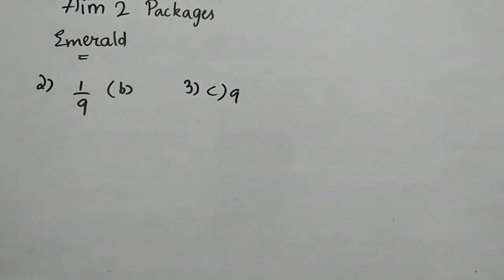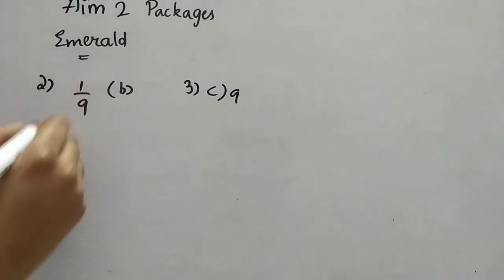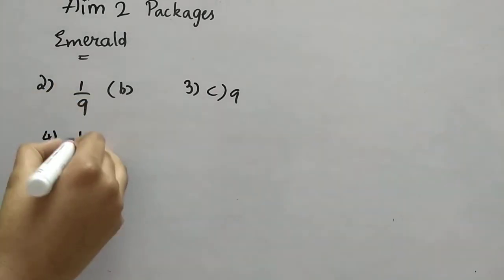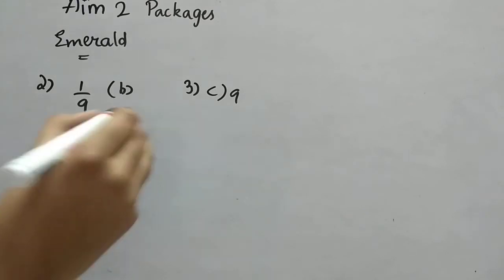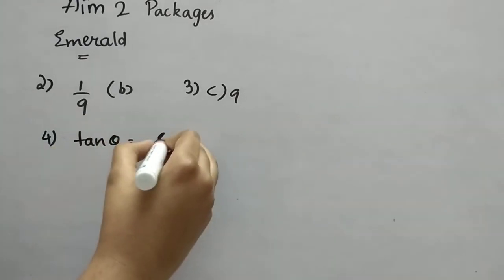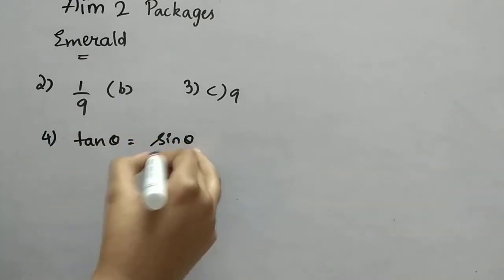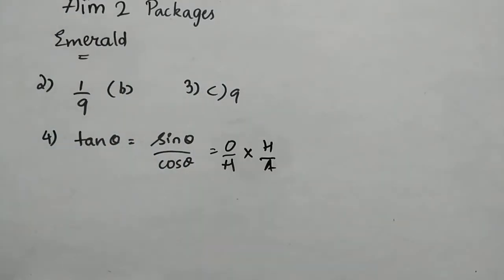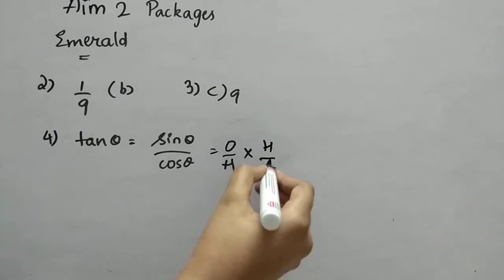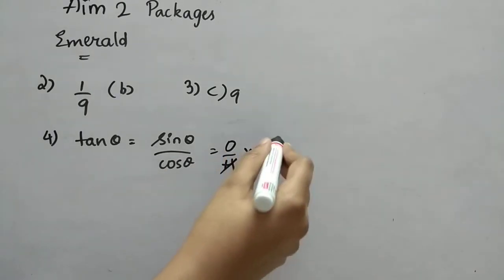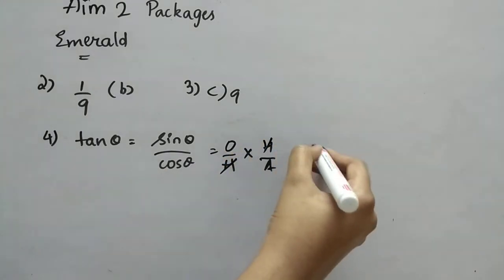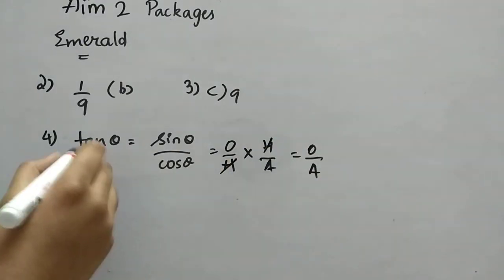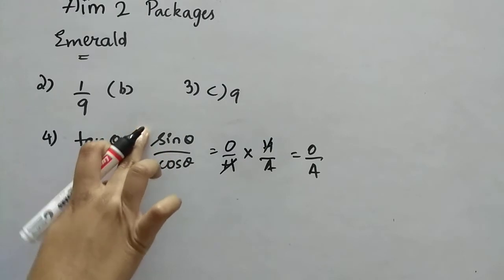Now we'll see the fourth question — more than one correct answer type. Tan θ equals sin θ by cos θ. Writing the formulas: sin θ = O/H, cos θ = A/H. Dividing, H cancels and we get O/A, which is tan θ. So option A is correct.